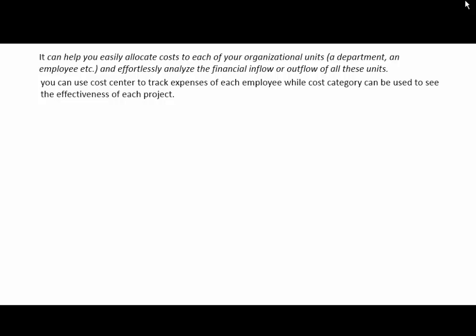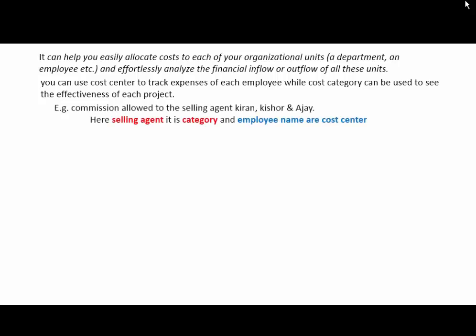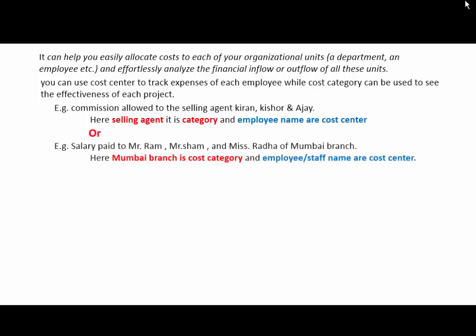You can use cost center to track expenses of each employee, while cost category can be used to see the effectiveness of each project. For example, commission allowed to selling agents Kiran, Kishore, and Ajay. Here, the selling agent is a category and the employees are under the cost center — meaning the amount paid to the selling agent is allocated to different cost centers. Similarly, if salary is paid to employees of different branches, the branch name is under the cost category and the employee or staff name is under the cost center.